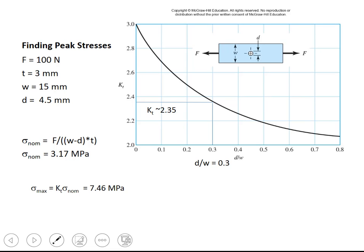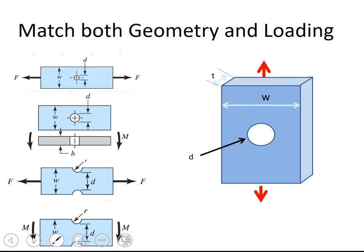Now each geometry is going to have its own table, its own factors. And the information you need is on the chart. In particular, make sure you look at the definition of sigma nominal. When you're going through these, you want to make sure that you match both the geometry and the loading. So for example, we have this bar with a hole in it. It could be loaded with a force or it could have a bending moment, right? And the charts would be different, different values of stress concentration for each of those. Similarly, we could have this other geometry with notches on the sides that could be loaded differently.